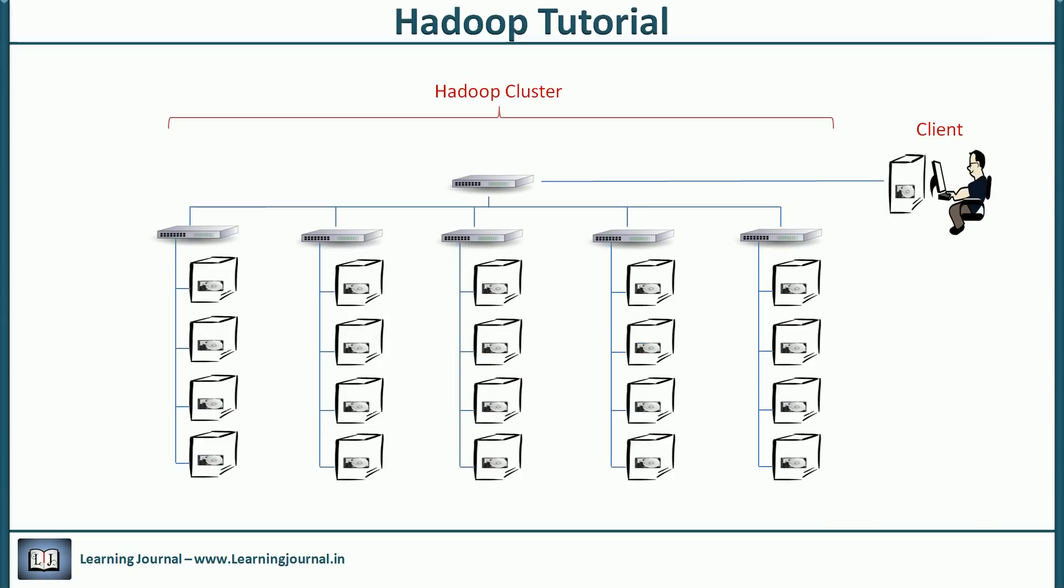The HDFS is designed using master-slave architecture. In this architecture there is one master and all others are slaves. So let's assume that this one is the master and all others are slaves. The Hadoop master is called the name node and slaves are called data nodes.